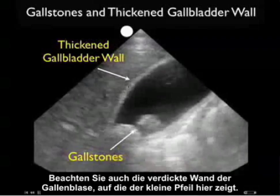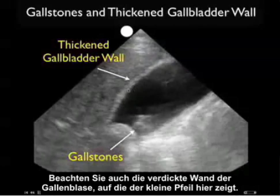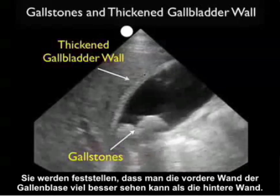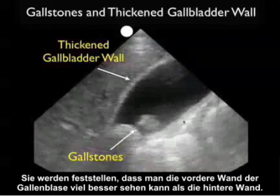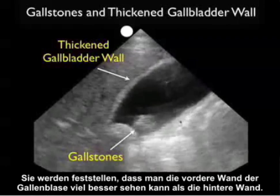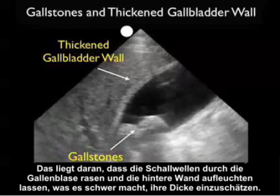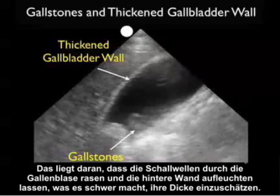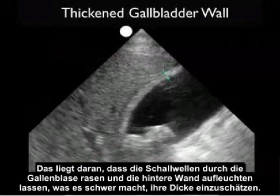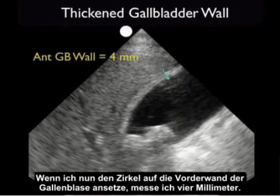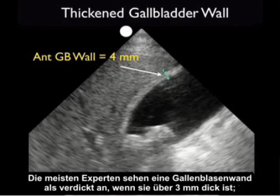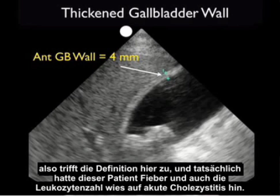Notice also the presence of a thickened gallbladder wall as referenced here with a small arrow. Notice here that it's much easier to see the anterior wall than the posterior wall of the gallbladder, because the sound waves race through the gallbladder and light up the back wall, making it difficult to get a full sense of how thick it is. When I put the calipers down on the anterior gallbladder wall, I get a measurement of four millimeters. Most authorities define a thickened gallbladder wall as greater than three millimeters, so this meets the definition.